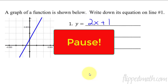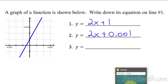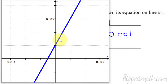Pause the video. The most likely answer is a y-intercept of 0.001 and the slope is still up 2 over 1. But what I'm going to show you is that neither of these answers are right, because we're zoomed in too close to the equation.